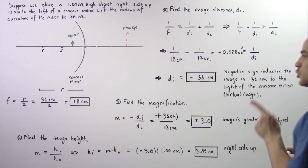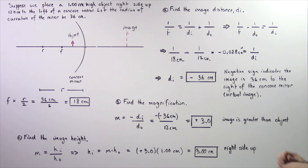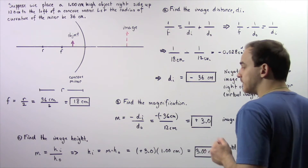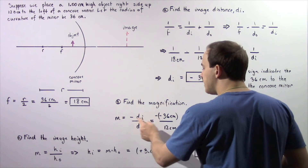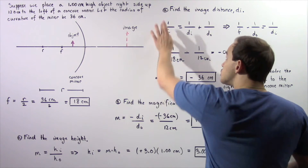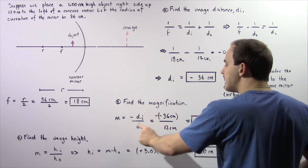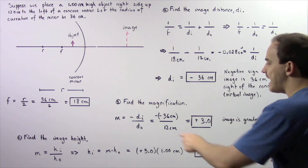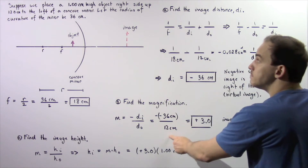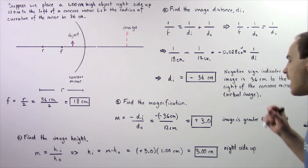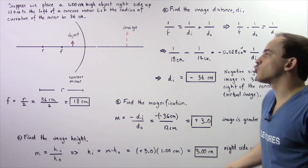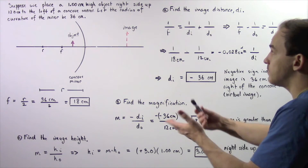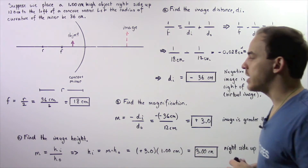Moving on to part B: find the lateral magnification. We apply the equation M equals negative DI divided by DO. From part A, the image distance is negative 36 centimeters, so negative multiplied by negative gives positive 36 centimeters, divided by 12 centimeters, gives us positive 3.0. The fact that it's greater than 1 means the height of the image is greater than the height of the object.